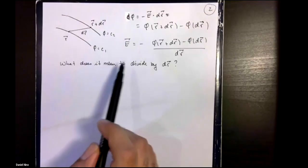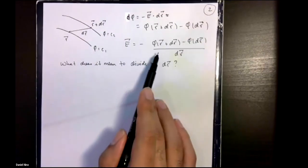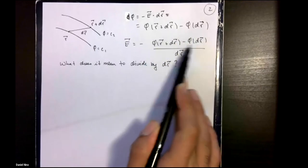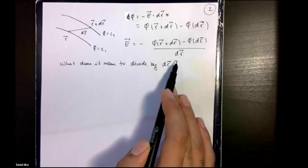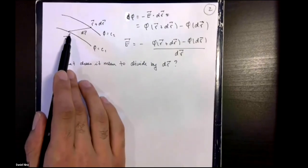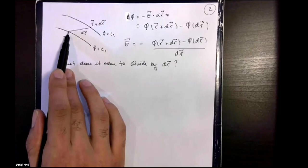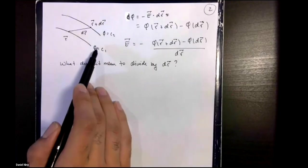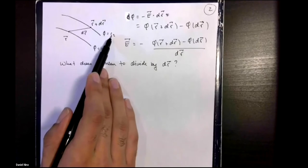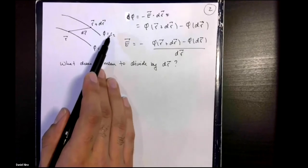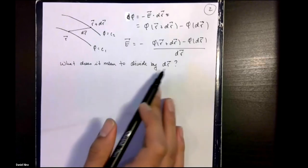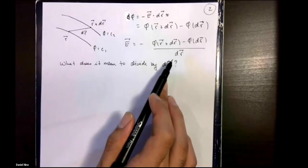In the last video we left off with this expression — we were dividing the difference of a scalar quantity by a vector. The problem we're considering was the change in potential from going from one equipotential at phi equals c1 to another equipotential at phi equals c2. So we wanted to answer the question: what does it mean to divide by a vector dr?